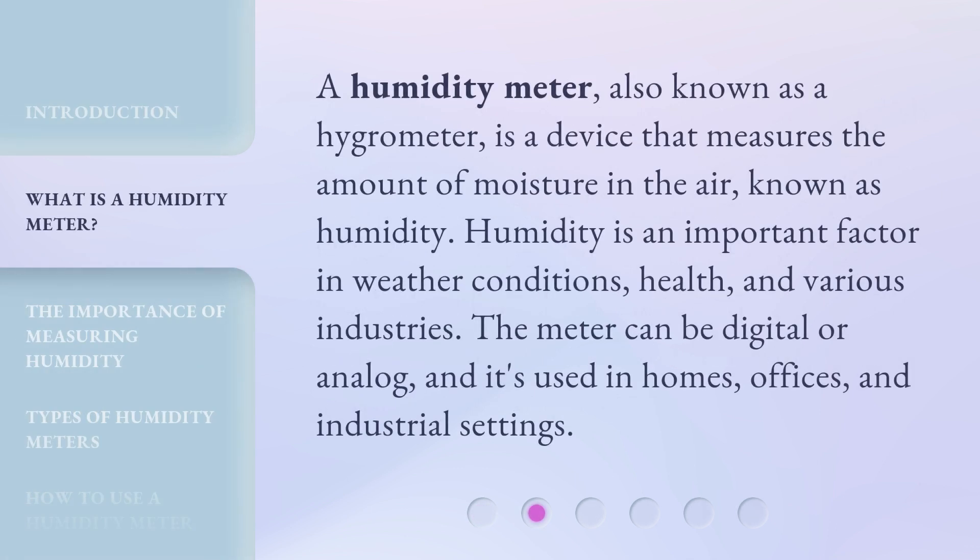A humidity meter, also known as a hygrometer, is a device that measures the amount of moisture in the air, known as humidity. Humidity is an important factor in weather conditions, health, and various industries. The meter can be digital or analog, and it's used in homes, offices, and industrial settings.